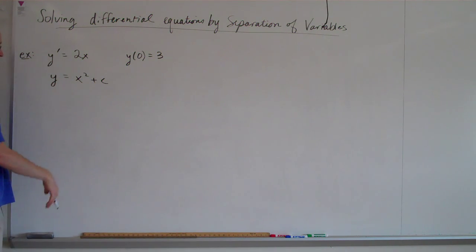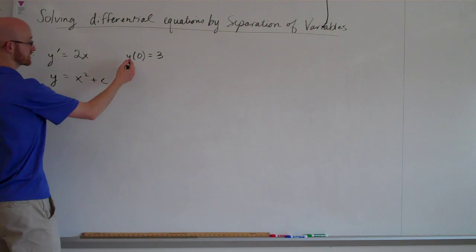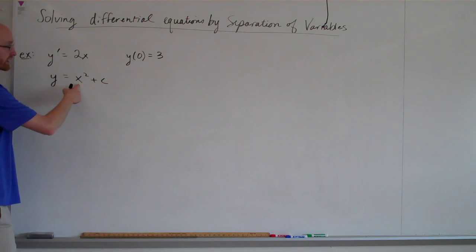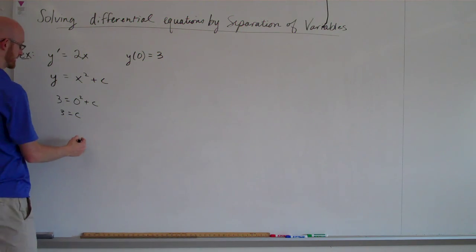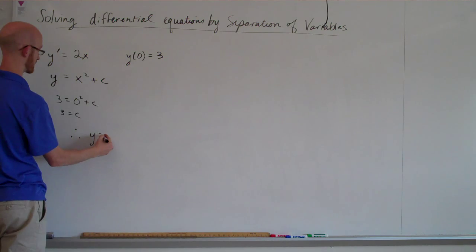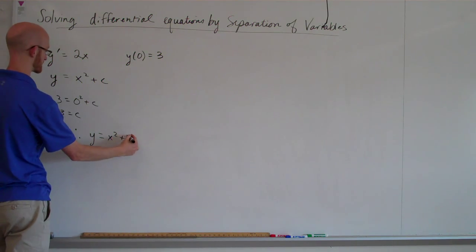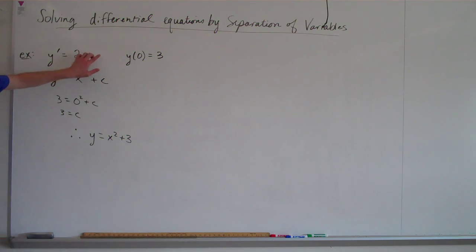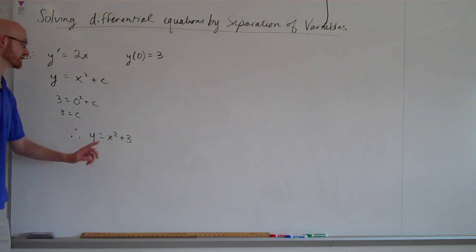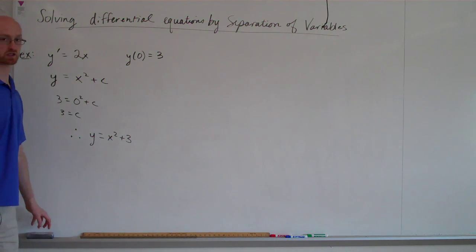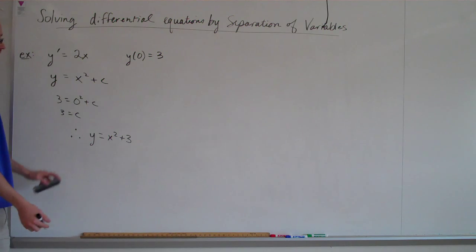x squared plus c. Now we see that if we plug 0 in for x, we get 3. So 3 is equal to 0 squared plus c. So 3 equals c. Therefore, our function is y is equal to x squared plus 3. So from these two conditions, I could figure out the exact function, y equals x squared plus 3, that satisfies both of those conditions.